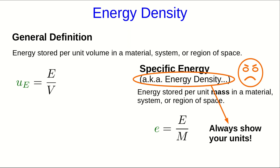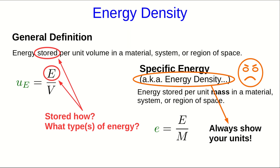This definition, as stated, is rather vague. Energy stored per unit volume. Stored how? What types of energy? In principle, we could mean all types of energy that are stored in an object or material, but usually that's not what we mean. We're usually interested in some particular types of energy which are relevant to the situation we're thinking about.